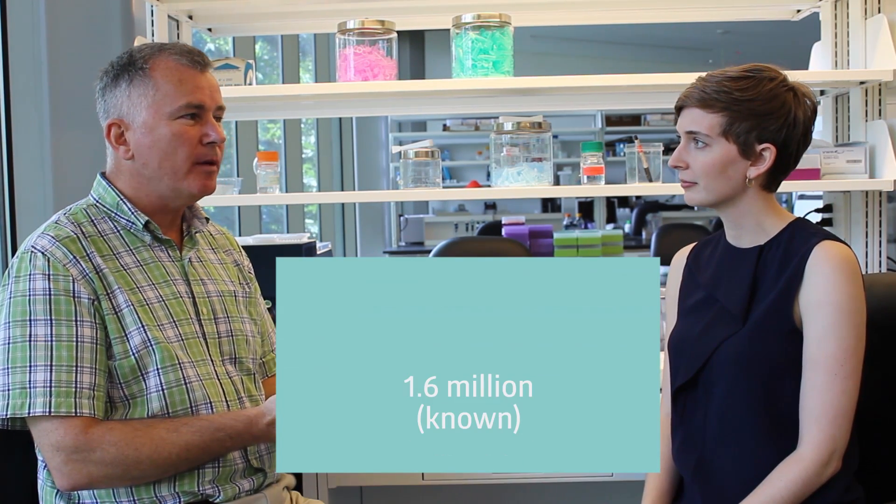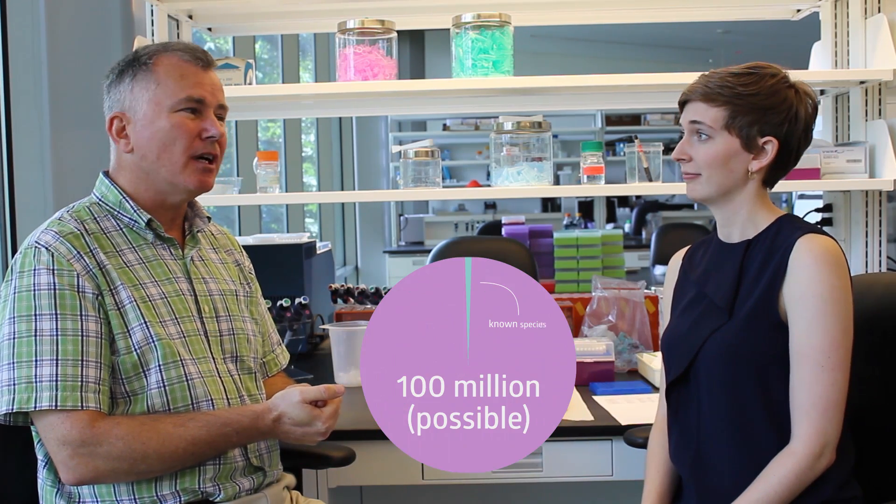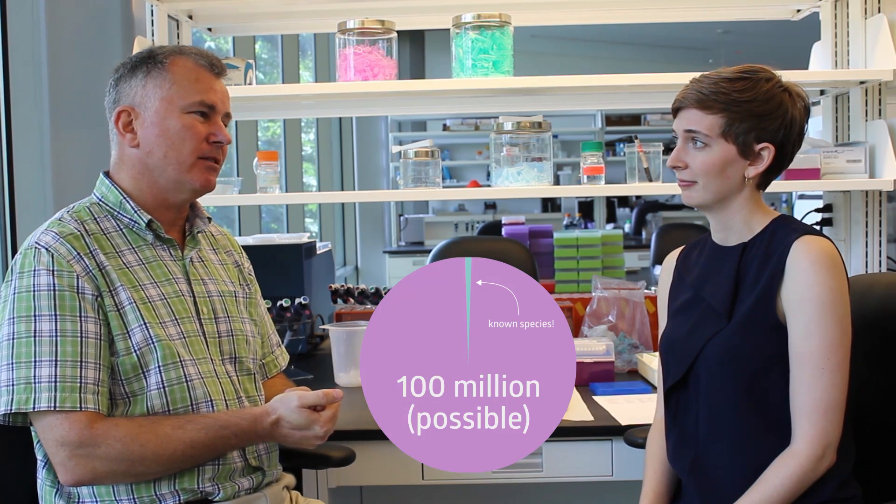Okay, before we jump in, can you tell us a little bit about molecular systematics? So the systematics part is really what we call biodiversity sciences. It's trying to understand the huge number of species out there. In terms of described species, there's about 1.6 million species and we think that there's up to 100 million species out there. So a lot more to discover. And then the molecular part is to try to use DNA-based characters to look at how all these different organisms are related through both space and time.